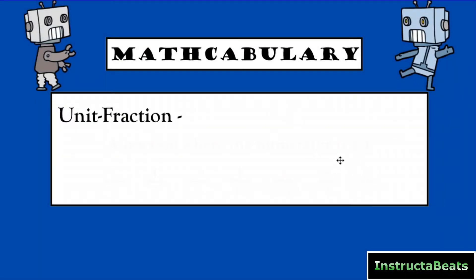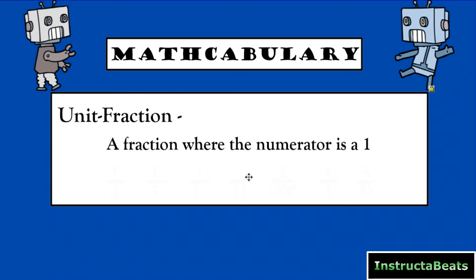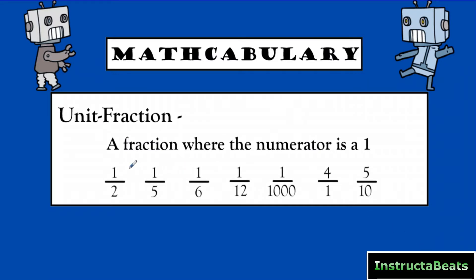Let's start with some mathcabulary. What do we mean by a unit fraction? A unit fraction is a fraction where the numerator is a 1. Here we have a list of fractions: 1 half, 1 fifth, 1 sixth, 1 twelfth, 1 thousandth. All of these are unit fractions because the numerator is a 1 — it's 1 unit out of whatever the denominator is.